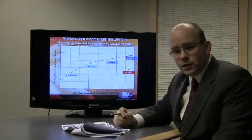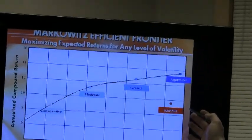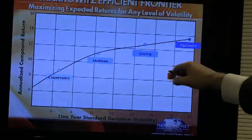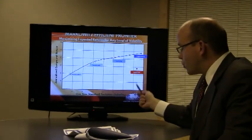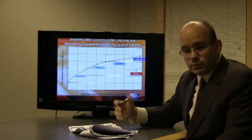And what the Markowitz Efficient Frontier would show us about a portfolio like that is that although you're receiving almost 10% annualized return on that investment, you're enduring almost 20% risk or volatility—standard deviation—per year.